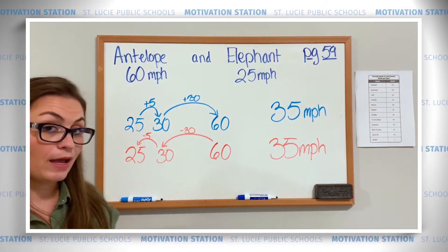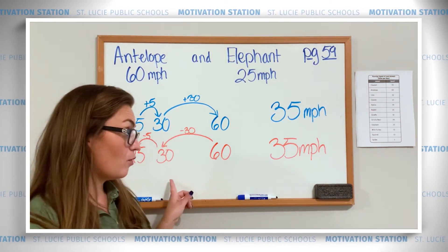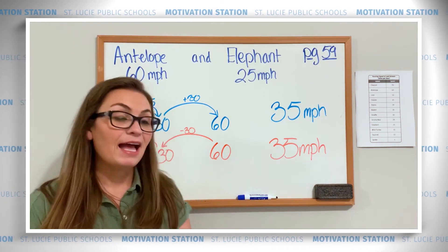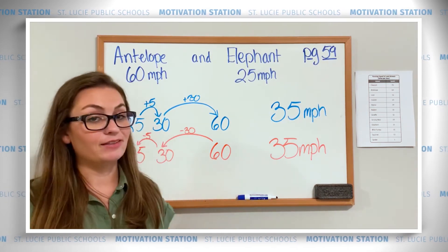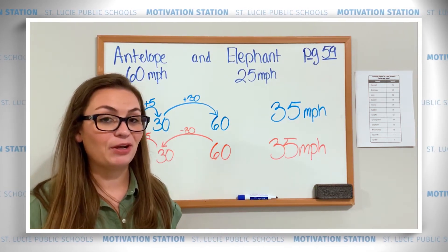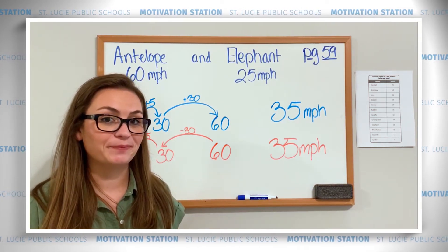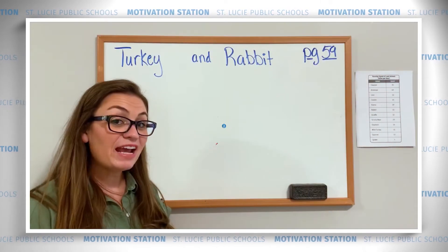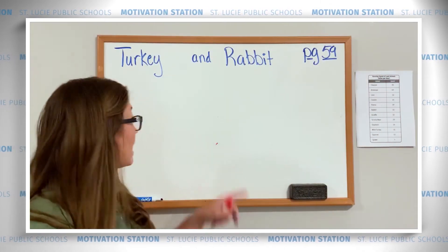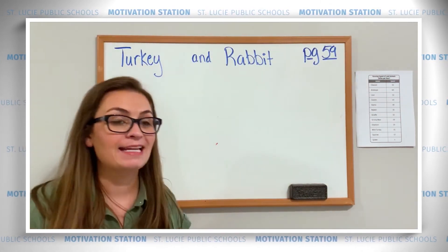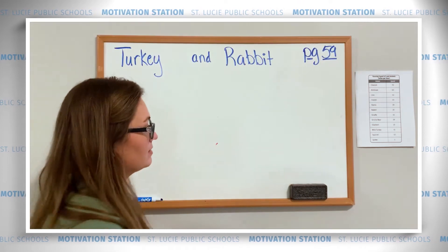Make sure that you have one of these open number lines written down, and then we're going to go to our next one. For the next problem, we're asked to compare the turkey and the rabbit.